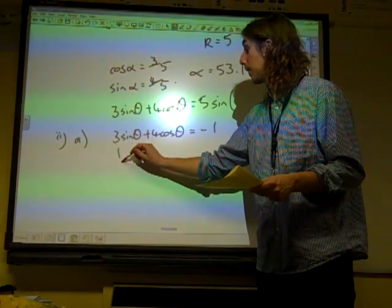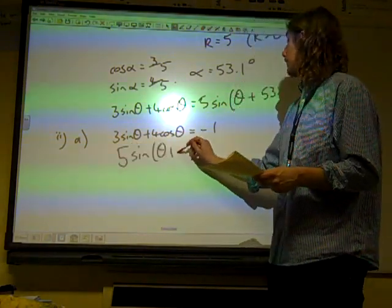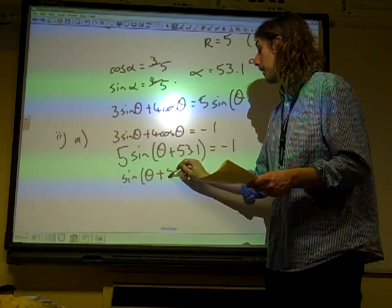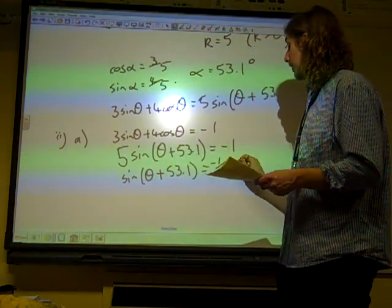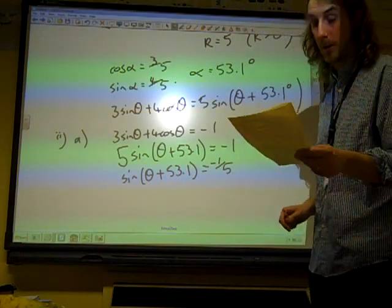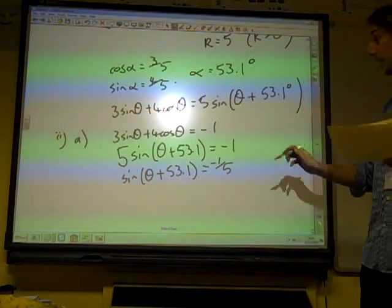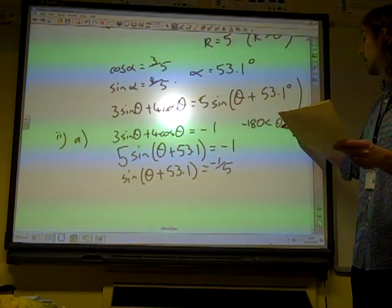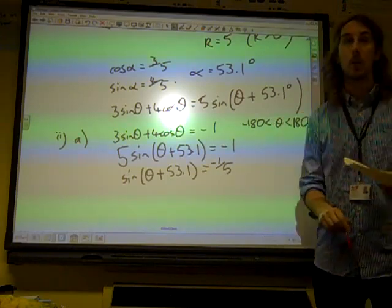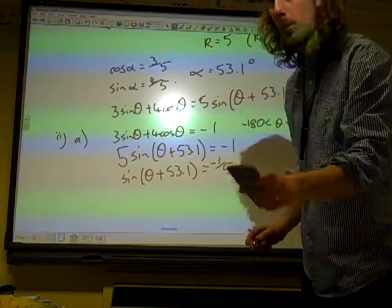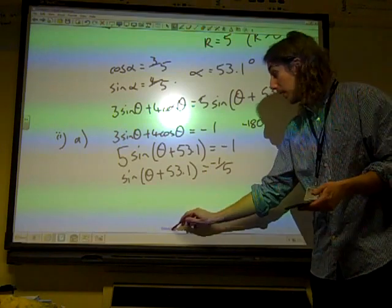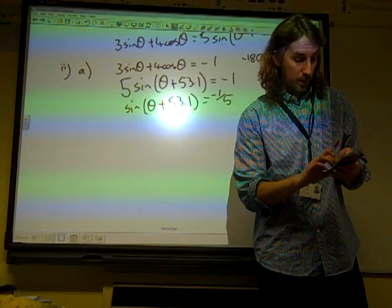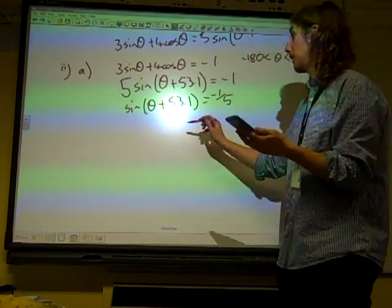So we're going to write 5 sine theta plus 53.1 is minus 1. So we need to work out the values that are after here. Again, this question said at the start that theta was between minus 180 and 180 degrees. So if we do inverse sine of minus 1 fifth on our calculator, it says minus 11.5.